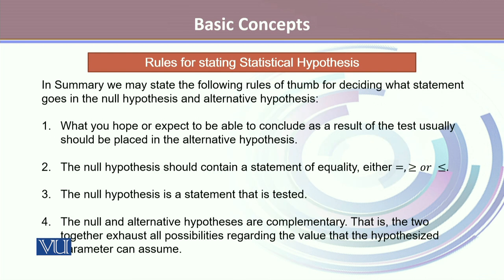In summary, the rule of thumb for deciding what goes in each hypothesis is: what you hope or expect to conclude as a result of the test should usually be placed in the alternative hypothesis. The null hypothesis should contain a statement of equality — either equal, greater than or equal, or less than or equal — whereas the alternative hypothesis contains not equal, less than, or greater than. The null hypothesis is a statement to be tested, and the null and alternative hypotheses are complementary to each other, together exhausting all possibilities regarding the value the hypothesized parameter can assume.